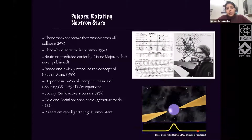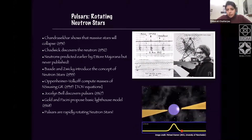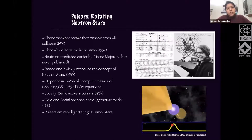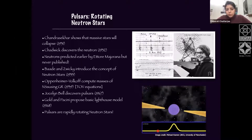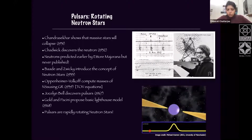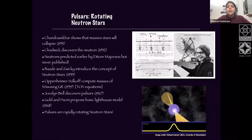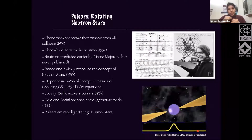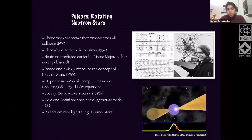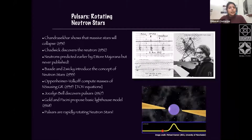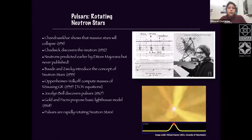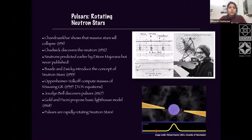After this groundwork, Jocelyn Bell discovered pulsars in 1967. Following this, Gold and Pacini proposed the basic lighthouse model to describe these objects. It was now understood that pulsars are nothing but rapidly rotating neutron stars. There is a beam of electromagnetic emission along the poles which sweeps the Earth like a lighthouse, and therefore we observe very periodic pulses — that's why they were called pulsars.